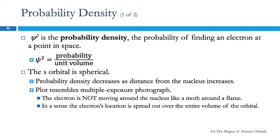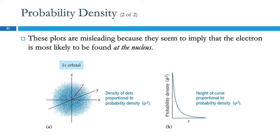The plot of these resembles a multiple exposure photograph. Like you took a picture and the electron's at that dot, you take a picture a second later and the electron's in a different spot, and so you get all these dots. What's important to realize is the electron is not moving around the nucleus like a moth around a flame. That was my picture of it for a long time, just zigzagging all over the place. That's not what it's doing.